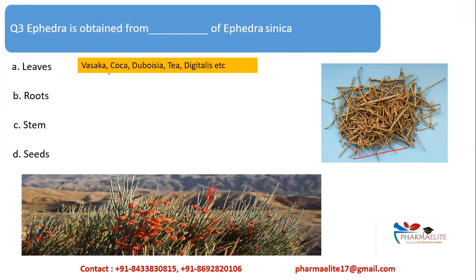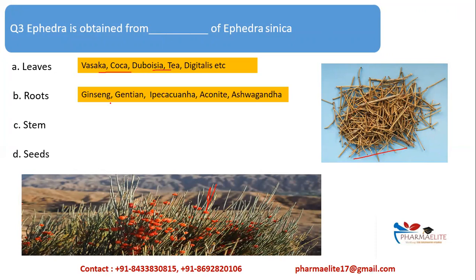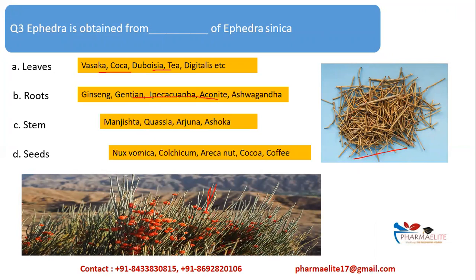For reference: leaves used in pharmacognosy include Vasaka, Coca, Duboisia, Tea, and Digitalis. Roots include Ginseng, Ipecacuanha, and Ashwagandha. Stems include Manjishtha, Quassia, Arjuna, and Ashoka. Seeds include Nux vomica, Colchicum, Areca nut, Coca, and Coffee. You may be asked in exams which plant parts are used. In this case, ephedra — the correct option is the stem. This is the Ephedra used in pharmacognosy practicals.